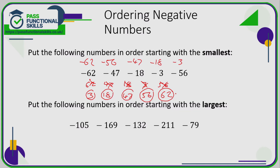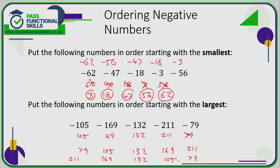Here we want the largest number first. Again, let's pretend these are positive numbers: 105, 169, 132, 211, and 79. In order: 79, 105, 132, 169, 211. Starting with the largest as positives: 211, 169, 132, 105, 79. For the negative numbers the order is reversed, so the largest is minus 79, followed by minus 105, minus 132, minus 169, and then minus 211, which is the smallest.